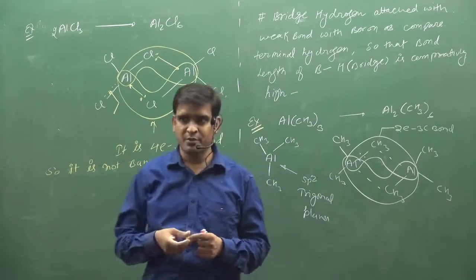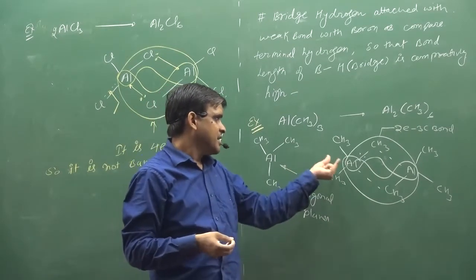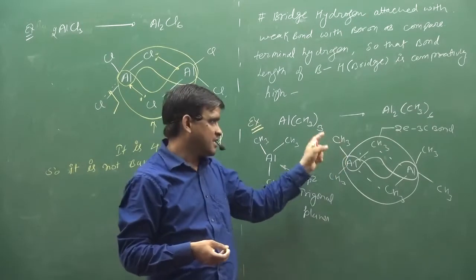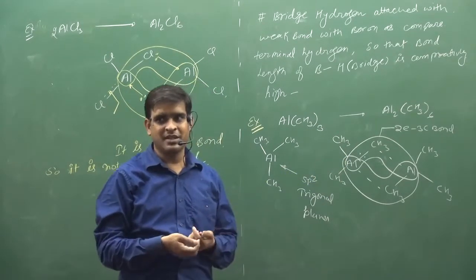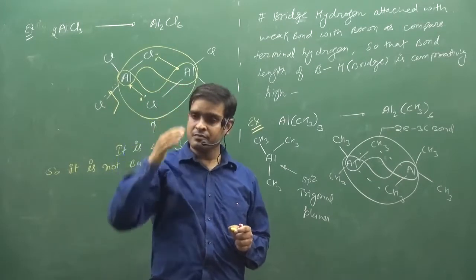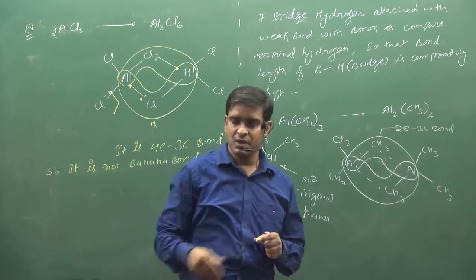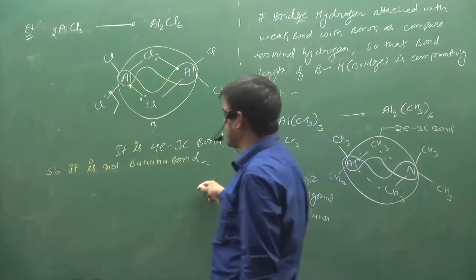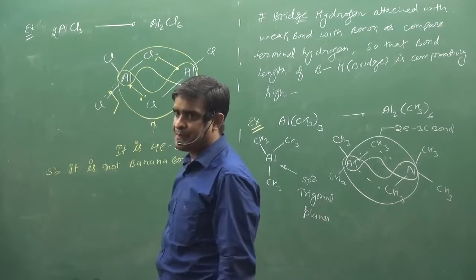So: 2 electrons, 2 centers - I am telling you, how many electrons are there? 2. And how many centers? So 2 electrons, 2 centers. Everything comes to understanding. So you have understood a very good concept. It is a 4-electron, 3-center bond. So it is not banana bonding.